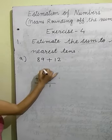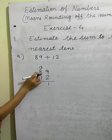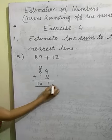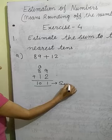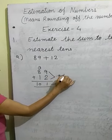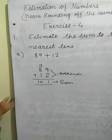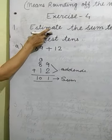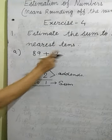One will carry to the next place. 1 plus 8 is 9, and 9 plus 1 is 10. So our sum is 101. These two are addends; the answer of addition is called the sum. We have found the sum. Now we have to estimate the sum — 101 will be estimated to the nearest 10.